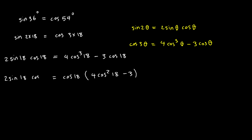Since cosine of 18 degrees is not zero, I can go ahead and cancel it from both sides — basically, I divide both sides by cosine of 18. So I will have 2 times sine of 18 equals 4 times cosine squared of 18 minus 3.